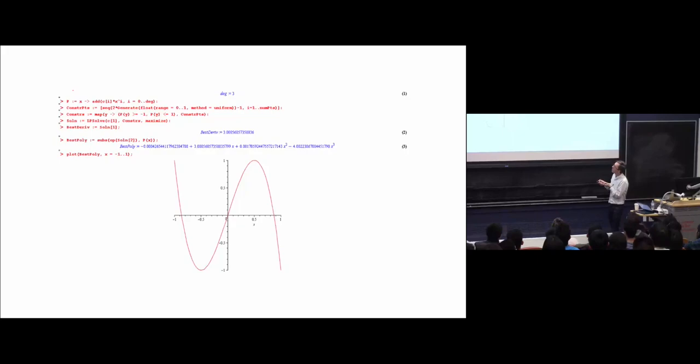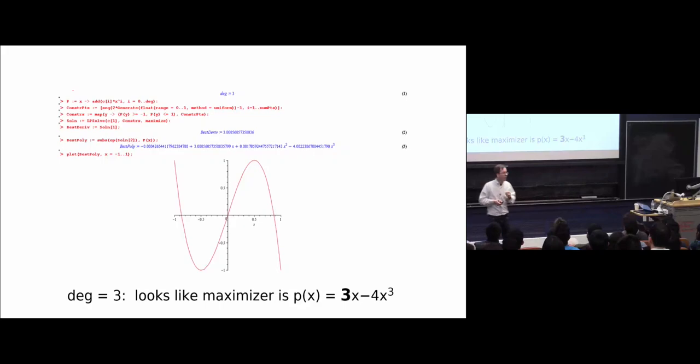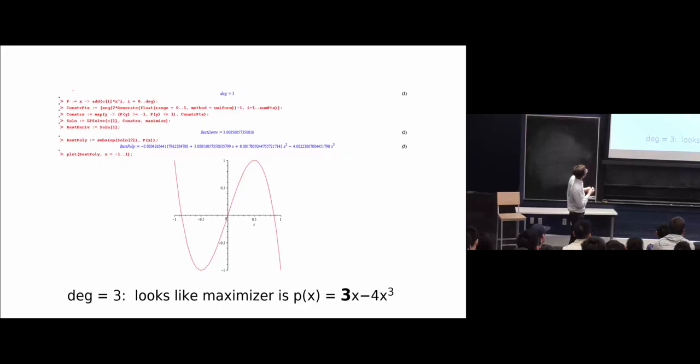So probably that's three, right? I mean, if you think about it right, you didn't constrain the polynomial to be between minus one and one literally everywhere. You just did it on 5,000 points. So maybe it's actually going a teeny bit above one and minus one here. So if you really constrained it everywhere, then probably, you know, it would shave that 3.05 down to three, probably, right? Probably. So it looks like the maximizer, when the degree is three, is this polynomial. In fact, if you squint at the coefficients, this is actually basically zero, this is basically zero, this is basically three, this is basically minus four. It looks like it's 3x minus 4x cubed.